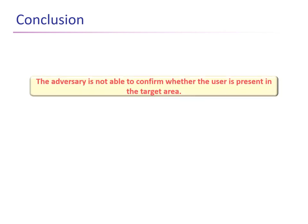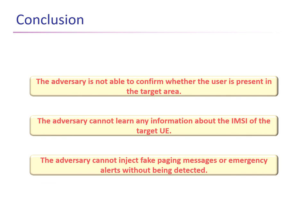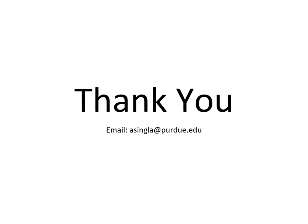In conclusion, let's look at the security guarantees provided by deploying our defenses. First, the adversary is not able to confirm whether a user is present in the target area, so any location tracking due to paging messages is prevented. Second, the adversary cannot learn any new information about the IMZ of the target UE, because we no longer base the paging occasion calculation on the IMZ — instead we use the ephemeral PTMZ identifier. Third, the adversary cannot inject fake paging messages or alerts without being detected, as a result of adding paging message authentication techniques. Thank you for listening, and I would be happy to answer any questions.